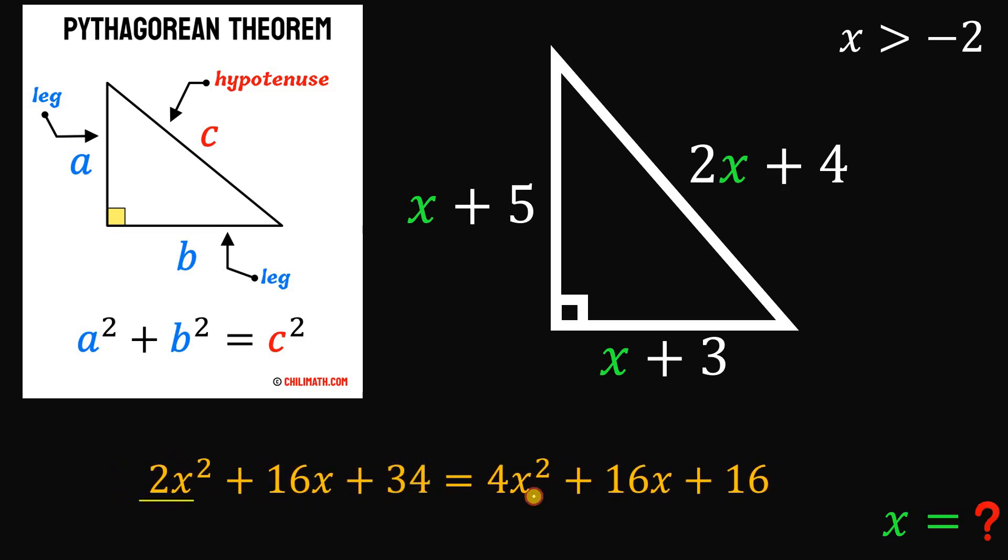Now, subtract 2x squared on both sides. This is just 2x squared on the right-hand side. 16x and 16x on left and the right side. If we subtract 16x, this is just 0.